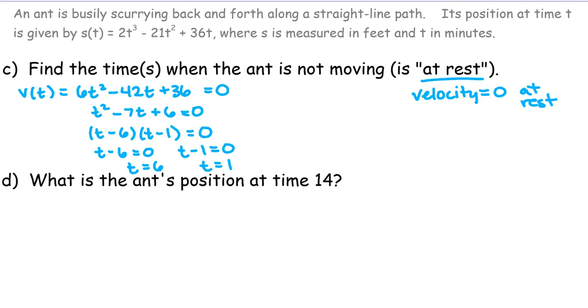Part D. What is the ant's position at time 14? Okay, we're talking about position. So we're going back to the original equation and just putting 14 in for t. So that would be 2 times 14^3 - 21 times 14^2 + 36 times 14. And that works out to be 1,876 feet. That seems like quite a ways to go for an ant. So they probably are getting pretty tired.